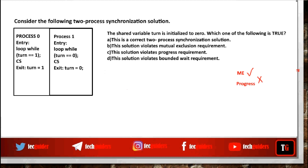What about bounded wait? There is strict alternation between the processes: p0 while exiting gives a chance to p1, and p1 while exiting gives a chance to p0. So there is strict alternation, and hence there is always a bound to the waiting time of each process. Bounded wait is guaranteed.